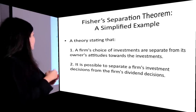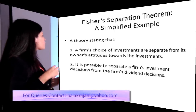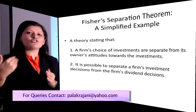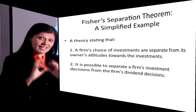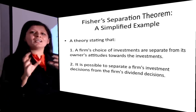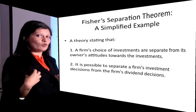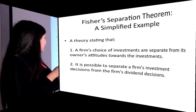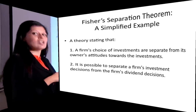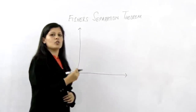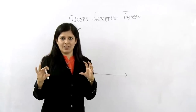Fischer's Separation Theorem states that a firm's choice of investments is separate from its owners' attitudes towards investment. The company has different kinds of shareholders — some prefer more dividend now and less later, some prefer less now and more later. So the company can't keep changing dividends as per different shareholders' preferences. Fischer stated it is possible to separate the firm's investment decision from its dividend decision.